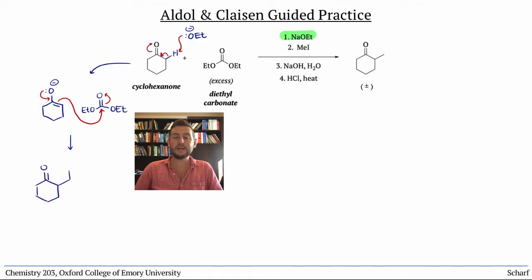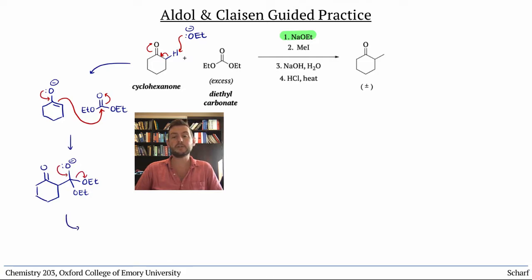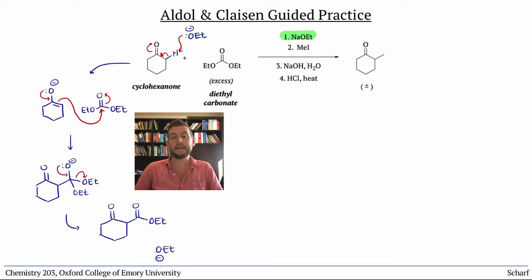The enolate donates into the π* C=O of the ester and creates a tetrahedral intermediate, which collapses by a lone pair push to kick out a good leaving group — here, ethoxide. We've produced a beta-dicarbonyl compound, so this is the Claisen reaction.